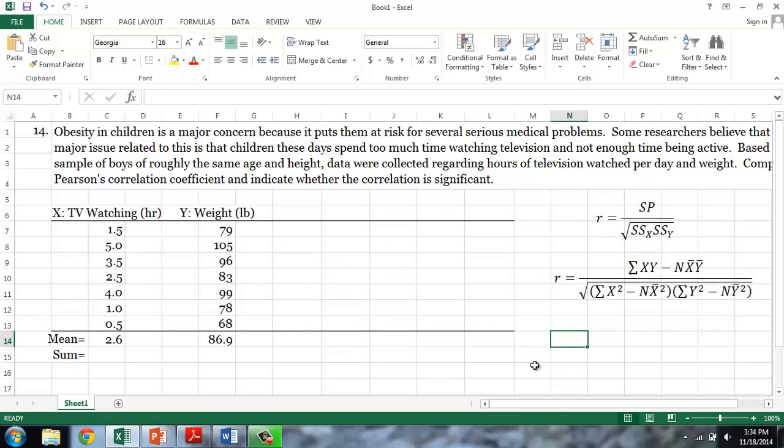The textbook also provides a computational formula, which makes calculating the correlation coefficient slightly easier. For this formula, we simply need a column for the product of x and y, squared x and squared y.